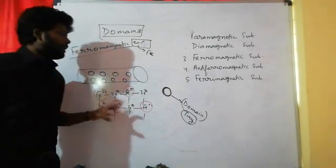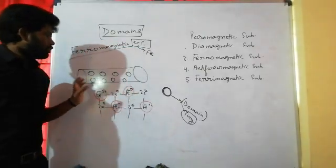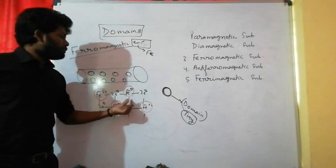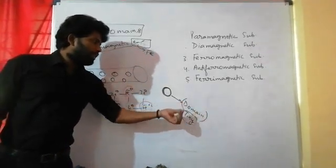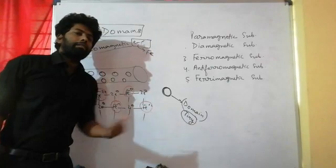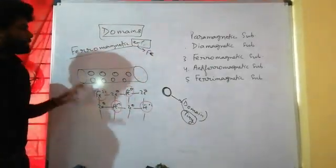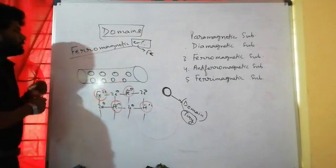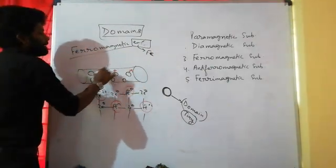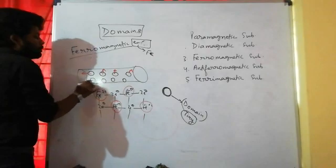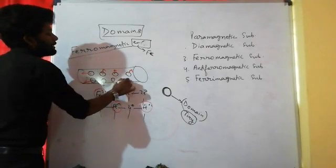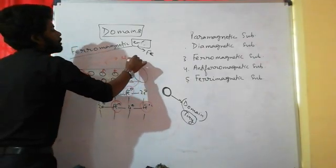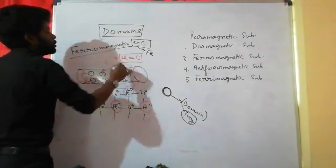In solid state, the metal ions are grouped into a small region known as a domain. Each domain acts as a tiny magnet. In the absence of a magnetic field, all these domains are randomly oriented, and therefore the net magnetic moment is equal to zero.